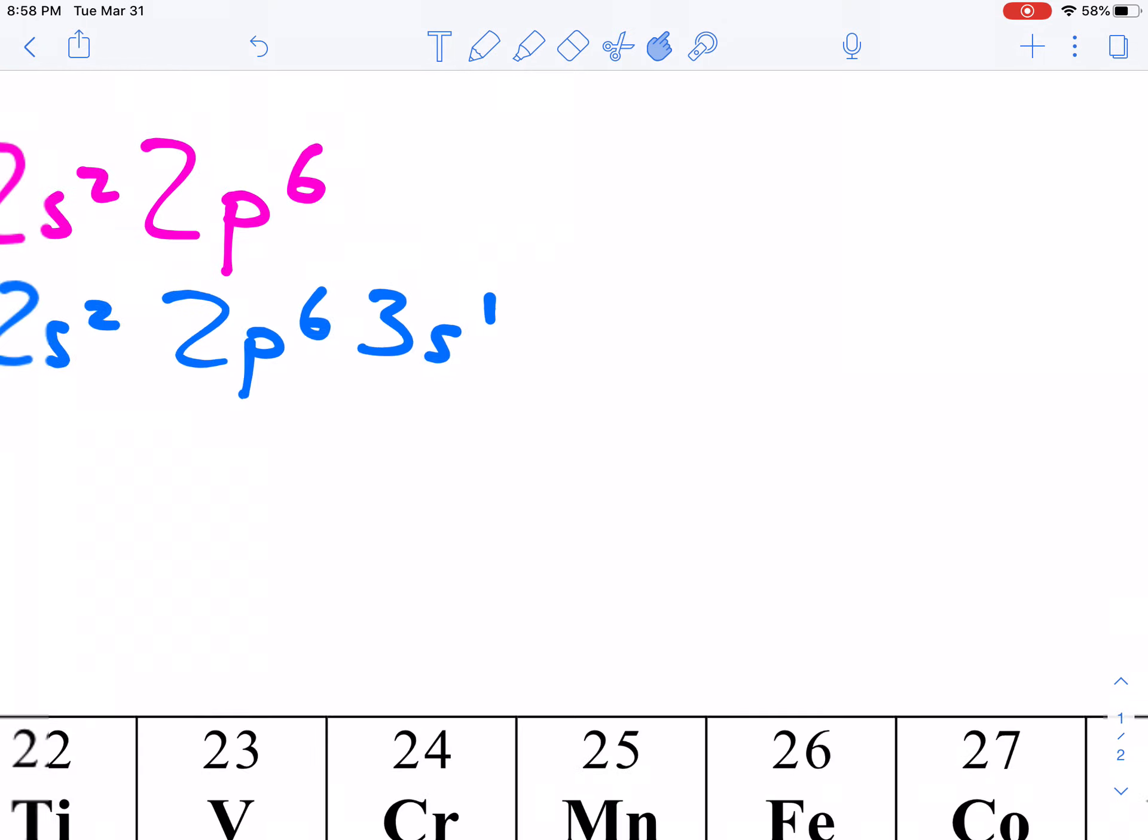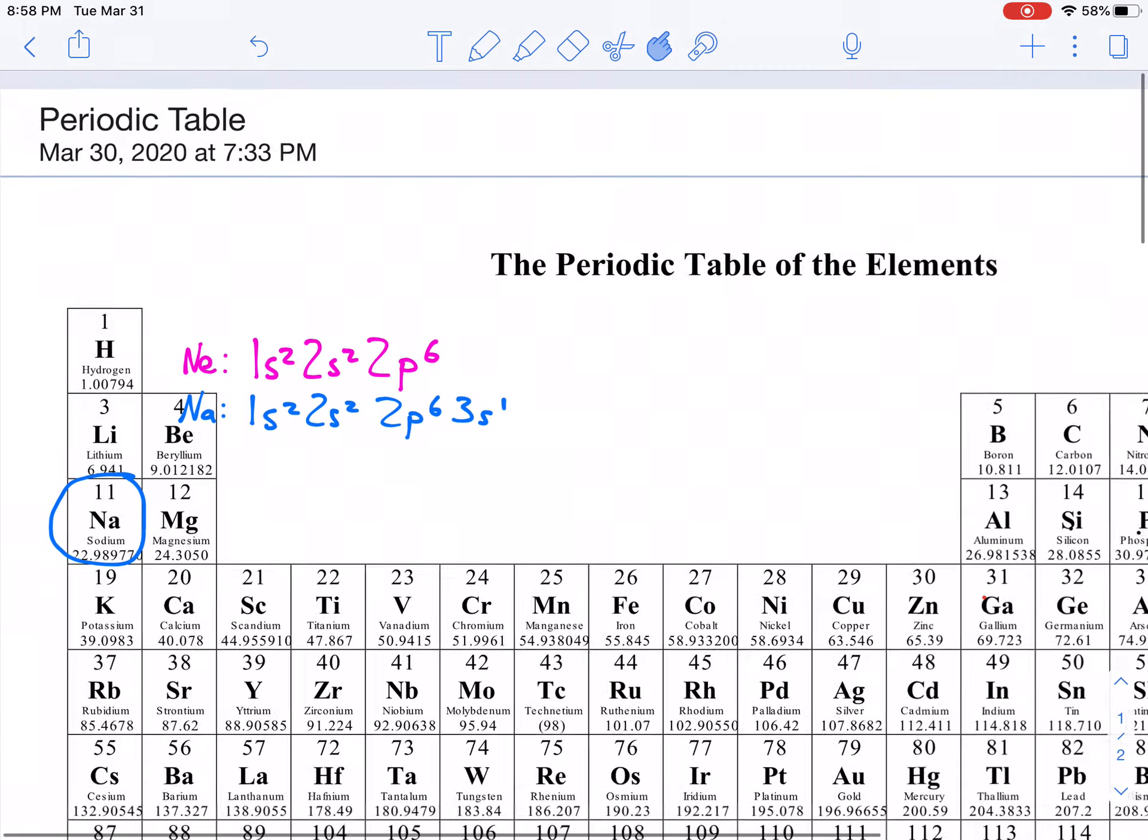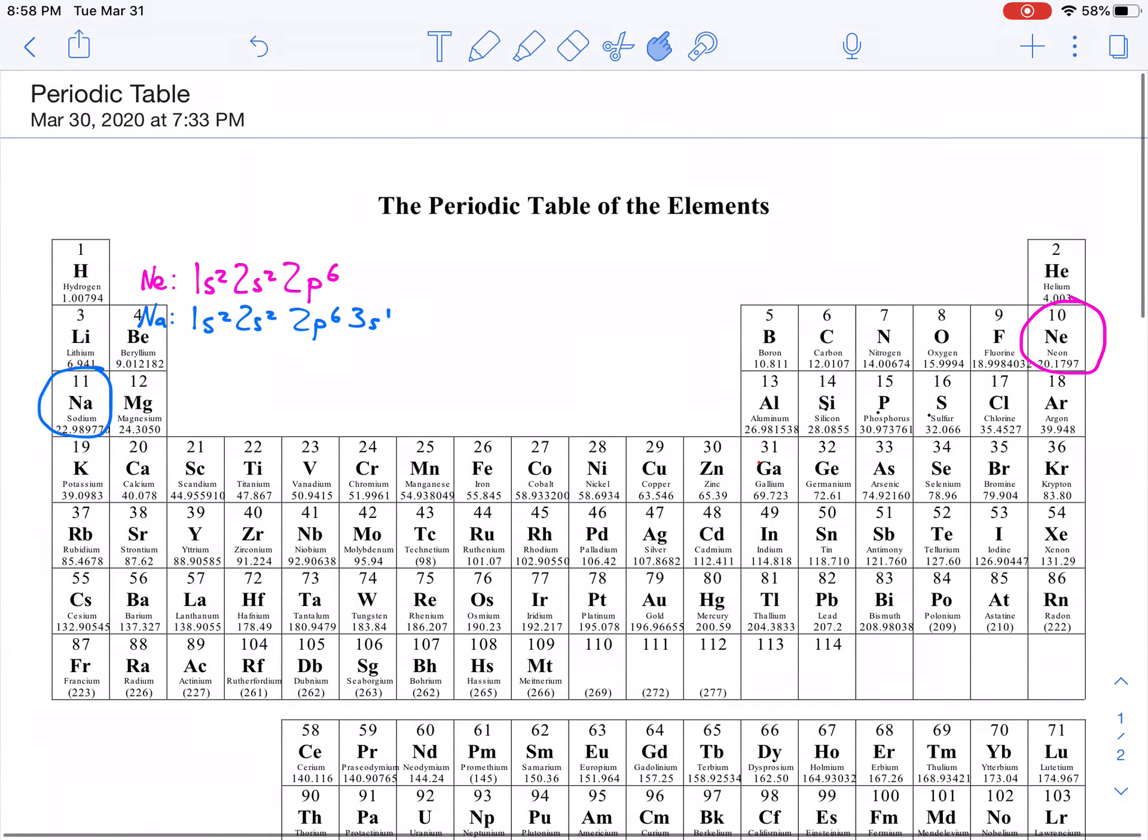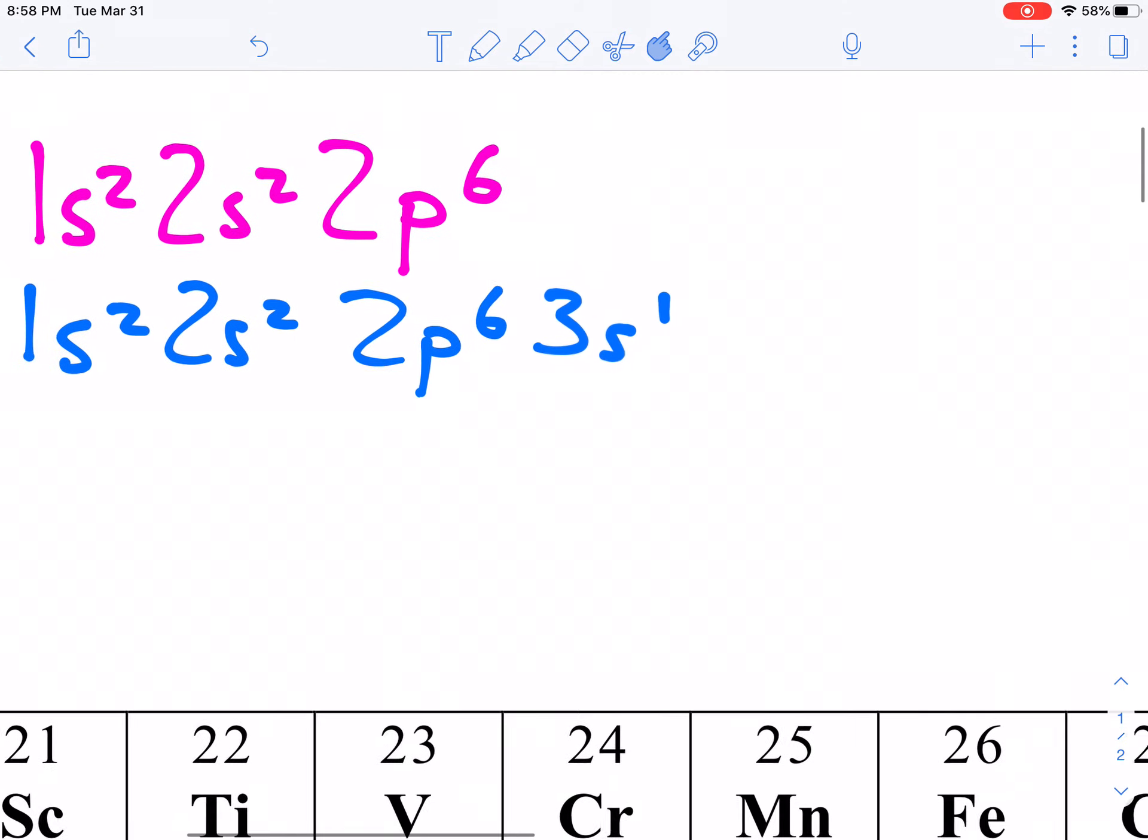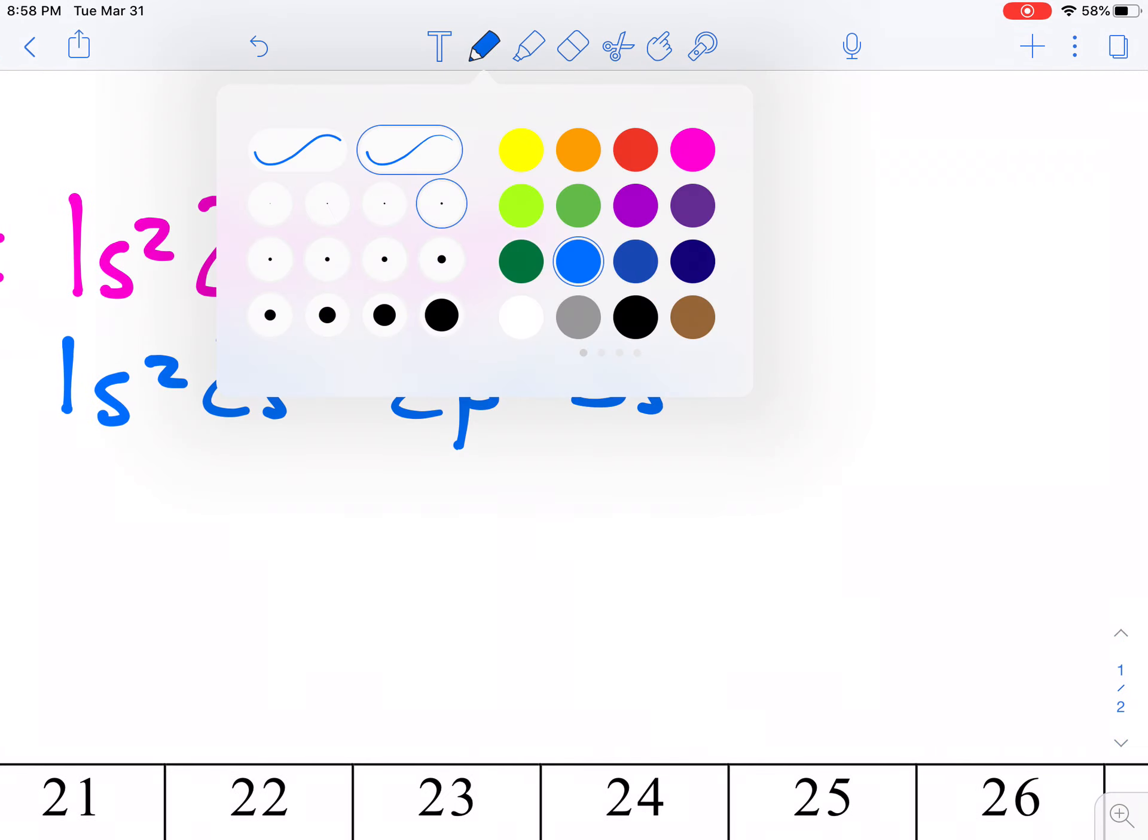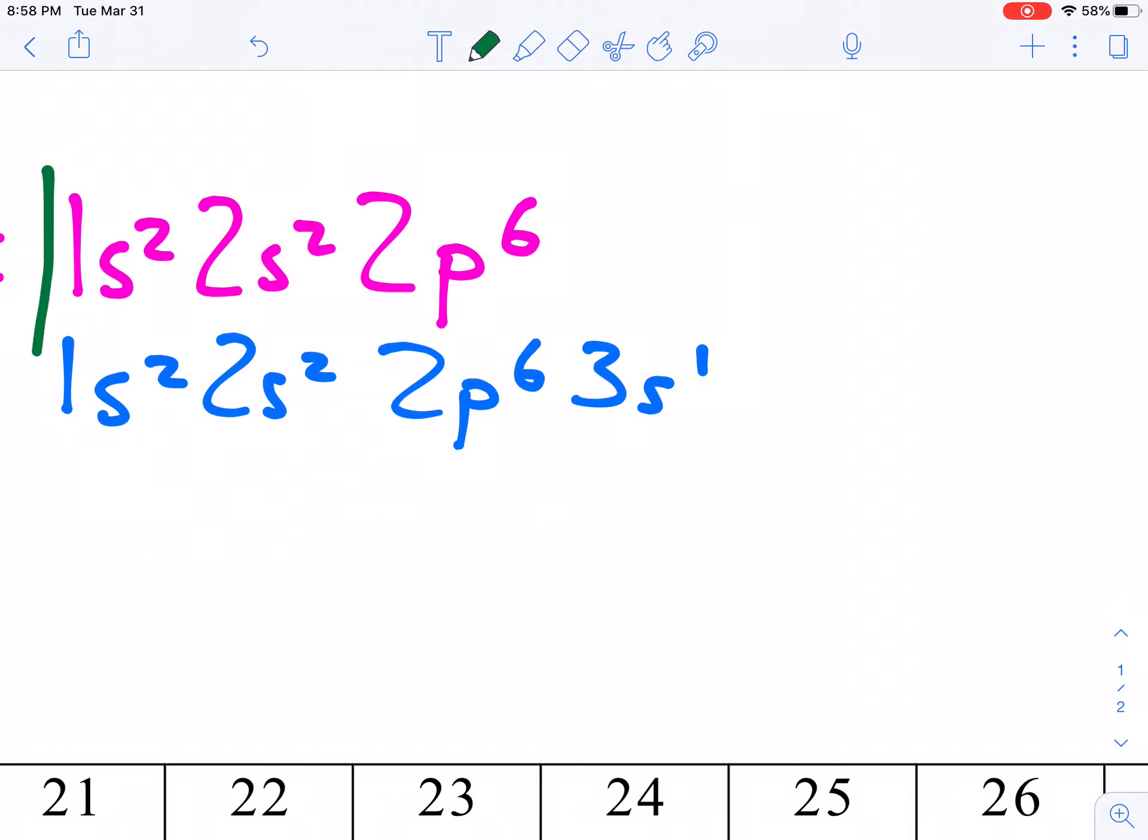And for sodium, it would look like 1s2, 2s2, 2p6, 3s1. So, what's going on there? Well, we're just writing out the electron configuration by reading across the periodic table, and you can see that this part of the electron configuration remains the same for both of these. And in fact, for any element that has more electrons than sodium, it's going to have all of those same things. It's always going to start 1s2, 2s2, 2p6.